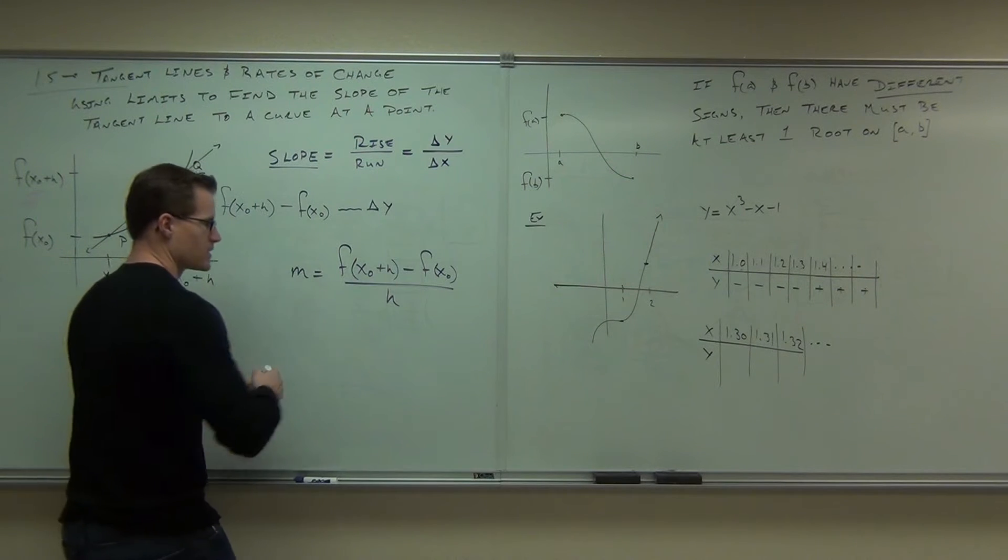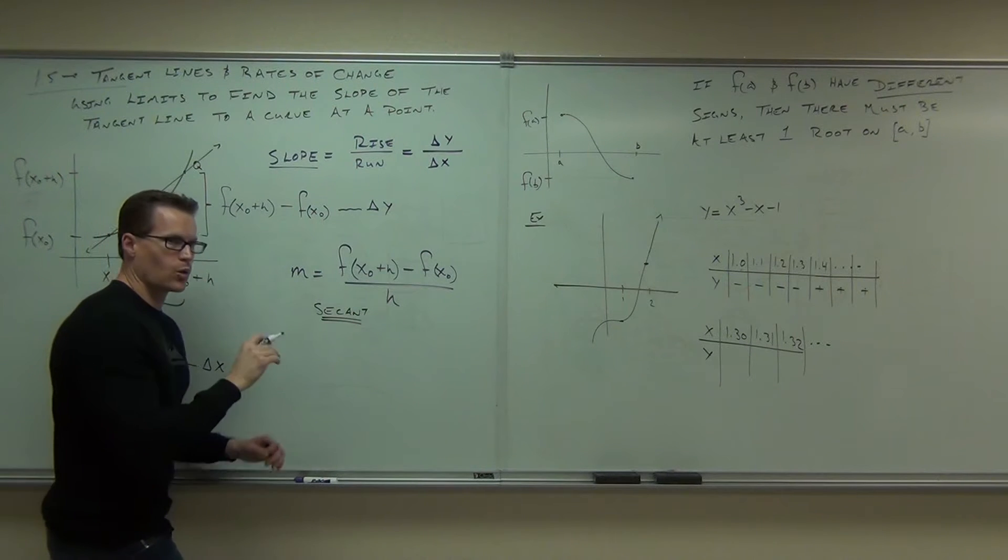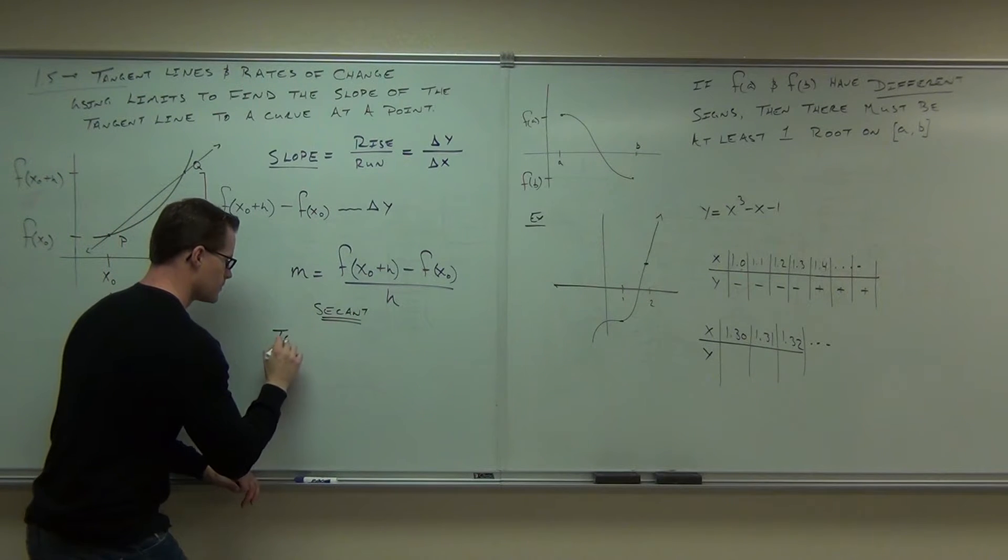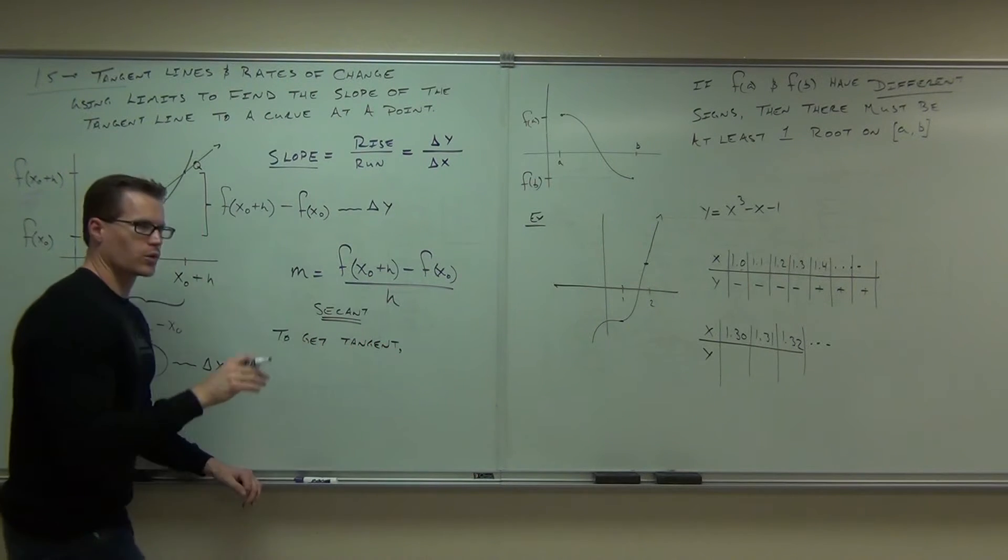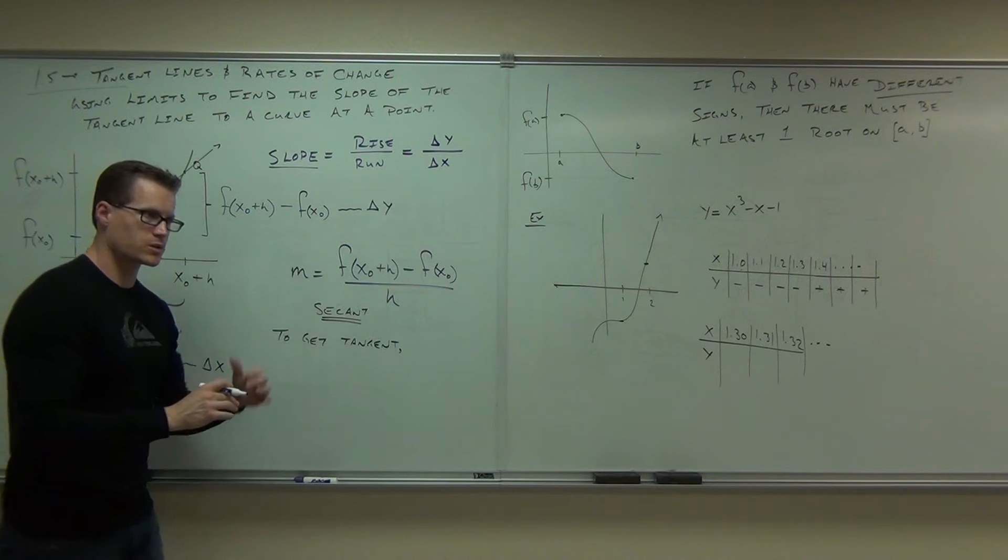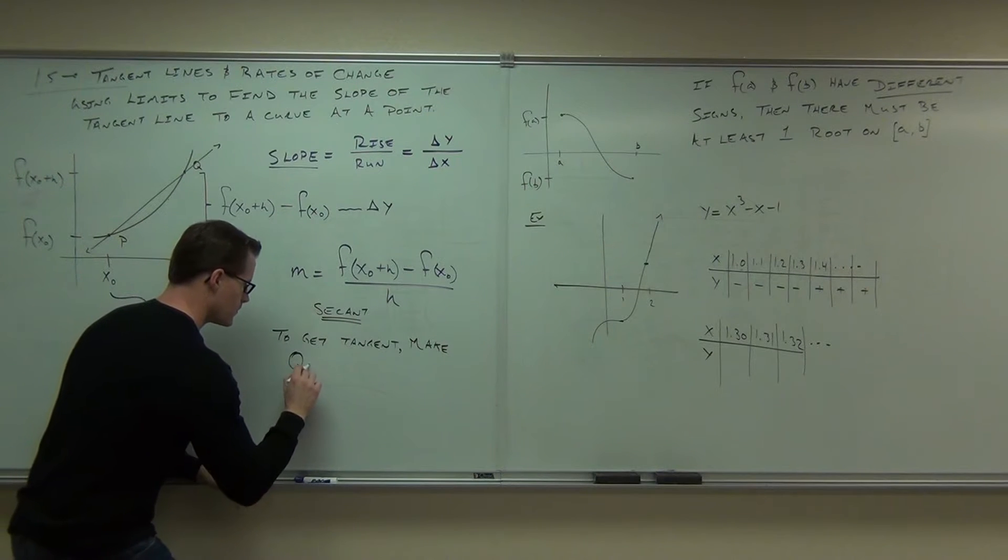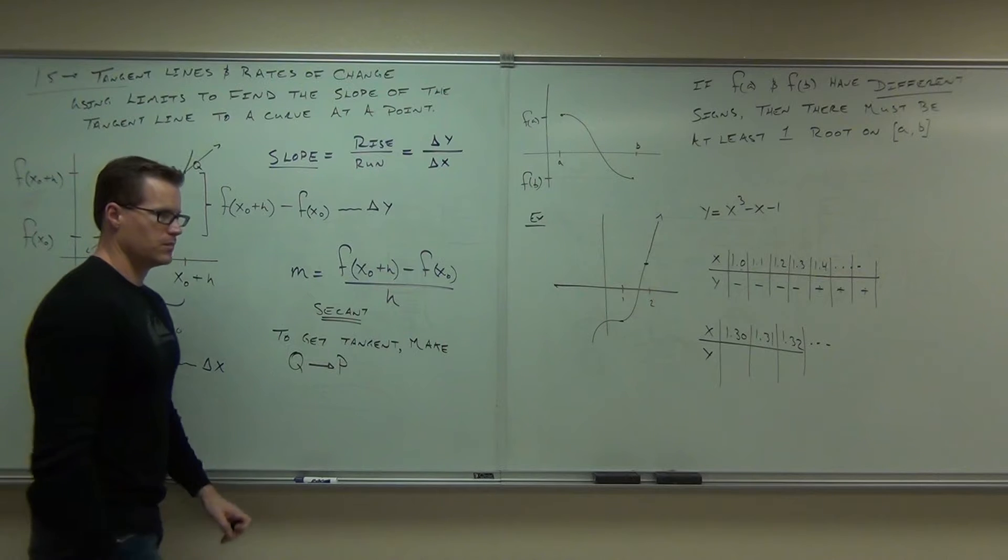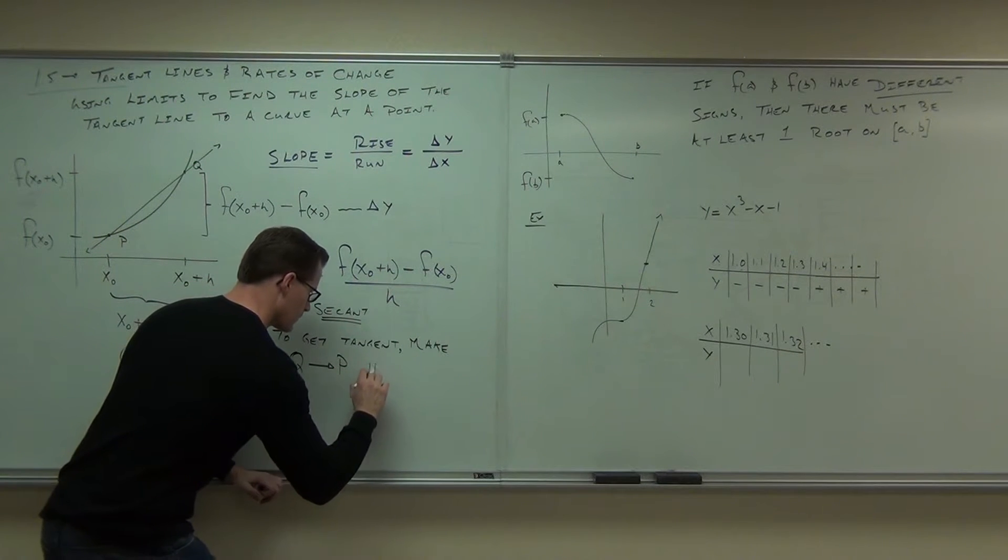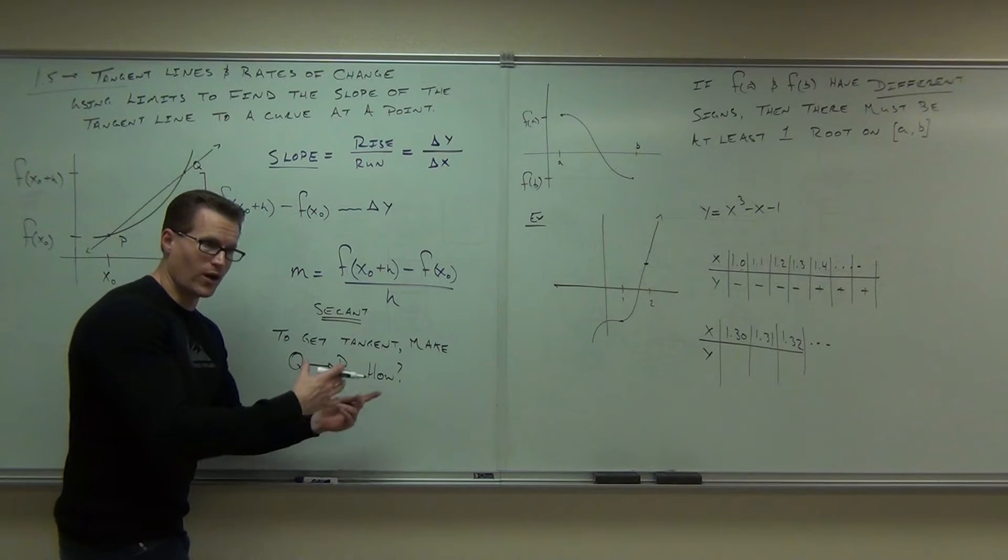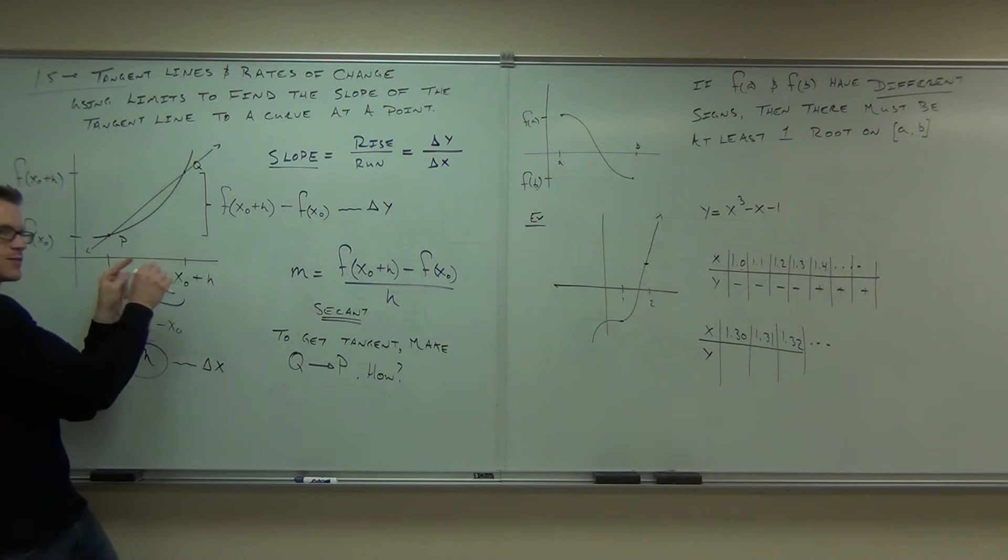So what we're going to do is - so this is a secant right now. In order to get the tangent, we're going to make point Q get close to point P. How, you might ask? Well, we're going to take that H, we're going to make it close to 0. That says the distance between them is very, very small.